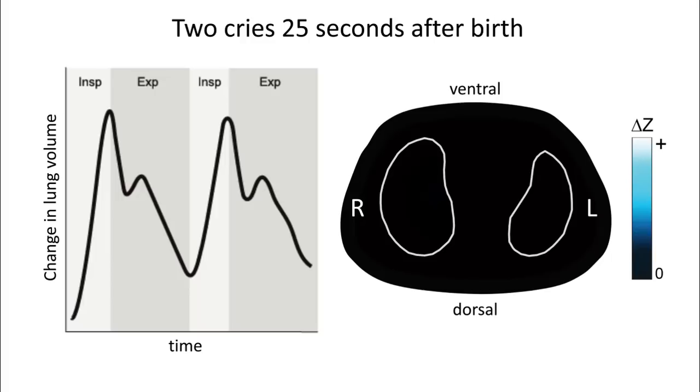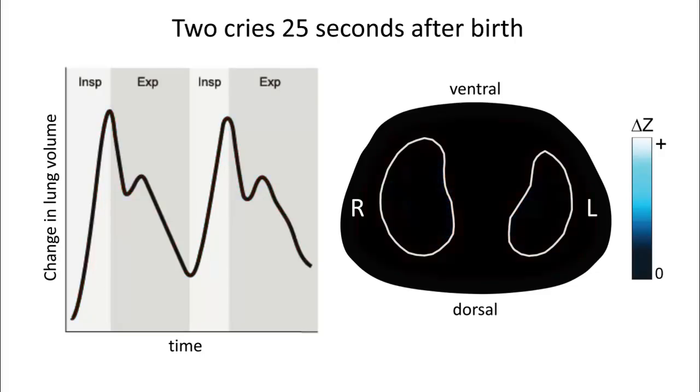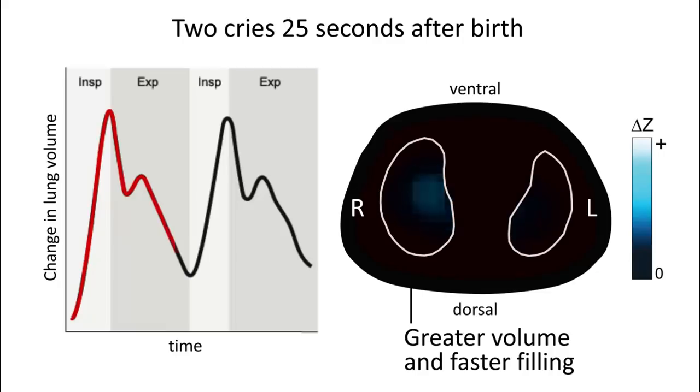The breathing pattern and resultant lung volume changes are markedly different when a baby is crying at birth. Here is shown in two cries 25 seconds after birth. Inspiration is quicker and volume changes greater in the right lung, which also fills with gas faster than the left.